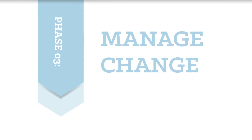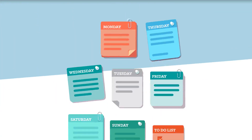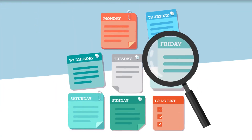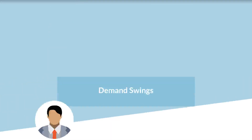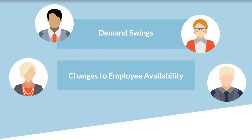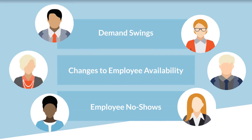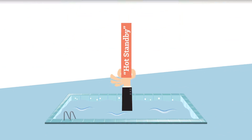Phase three: manage change. Once your schedule is published, keep a close eye on the common reasons for schedule changes: demand swings, employee availability, and day-of challenges such as no-shows. To help you prepare for changes, develop a hot standby pool made up of a small number of highly flexible employees who can jump in at a moment's notice.